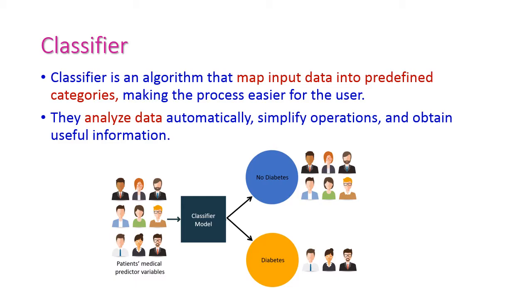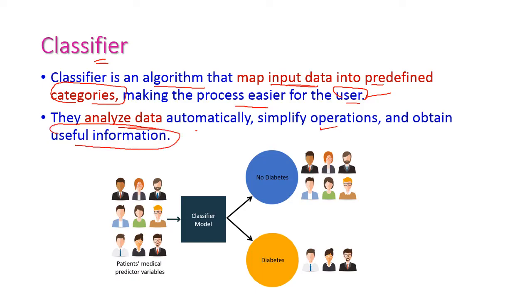The classifier is an AI algorithm which maps input data to predefined categories. It is used to make the process easier for the user. The classifier analyzes data automatically, simplifies operations, and obtains useful information. For example, given a patient's medical data, the classifier model will classify patients who have diabetes versus non-diabetes patients.